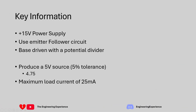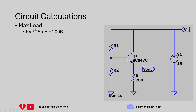Let's note down the key information given to us from the question. The power supply is 15 volts, we're using an emitter follower circuit, we need to drive the base with a potential divider, and we need to produce a 5 volt source. We have a 5% tolerance, which is 250 millivolts, so we can drop the output as much as 4.75 volts and still be in specification. The maximum load current is 25 milliamps, giving us a minimum load resistor of 200 ohms.